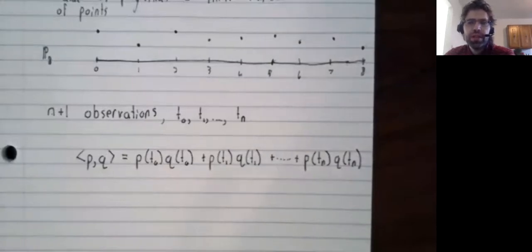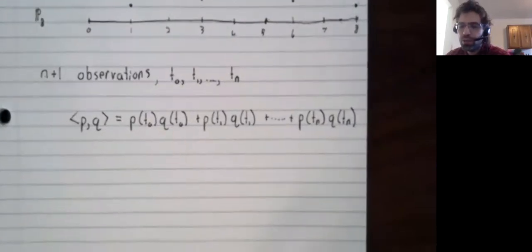As I say, there are an infinite number of dot products we could define on the polynomial space.